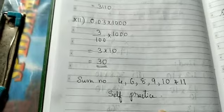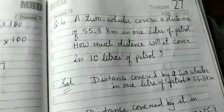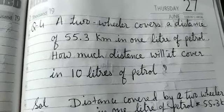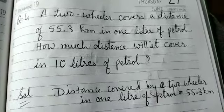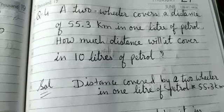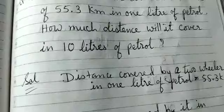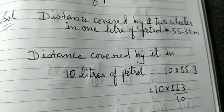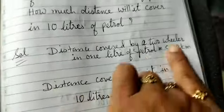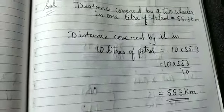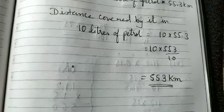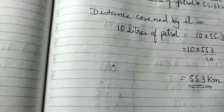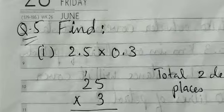Word problem question 4: a two-wheeler covers 55.3 km in one litre of petrol. Distance covered in 10 litres = 10 × 55.3. Shift decimal one place right: the answer is 553 kilometres.